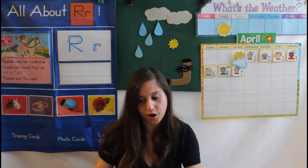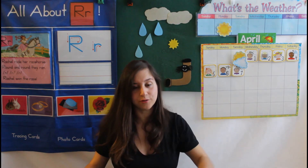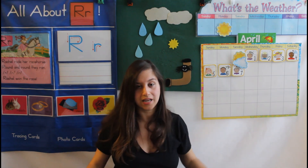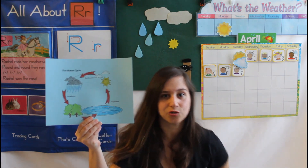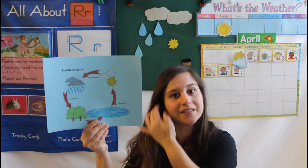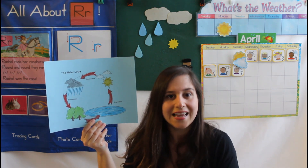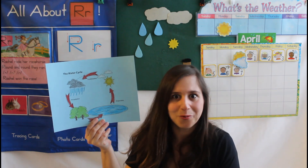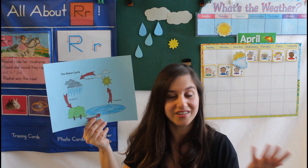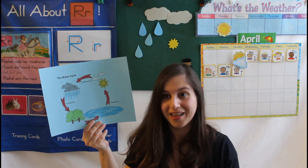Let's talk about the water cycle. A cycle means something that goes round and round — it keeps on going. The same thing is true about water. Did you know that actually some of the water on earth is as old as the dinosaurs? How cool is that? Some of the water we use today is around from the time of the dinosaurs, a long, long time ago. How neat.